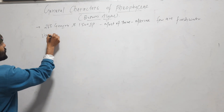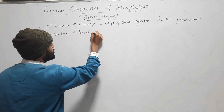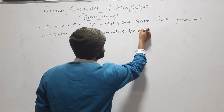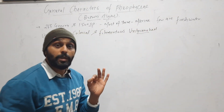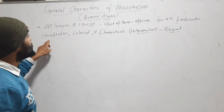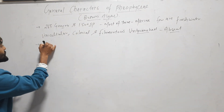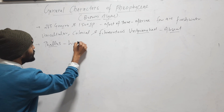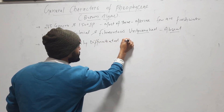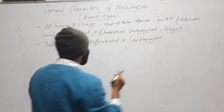Unicellular, colonial, and filamentous unbranched types of thallus are absent in Phaeophyceae. That means its thallus is highly differentiated and complicated.